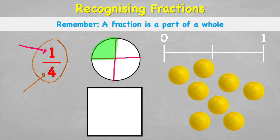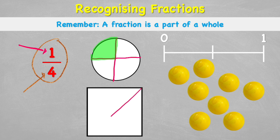Looking at a square, I could cut down the middle and then through the middle again to give myself one quarter, or I could go from the diagonal corners and give myself one quarter that way. There are lots of different ways to make a shape into quarters.